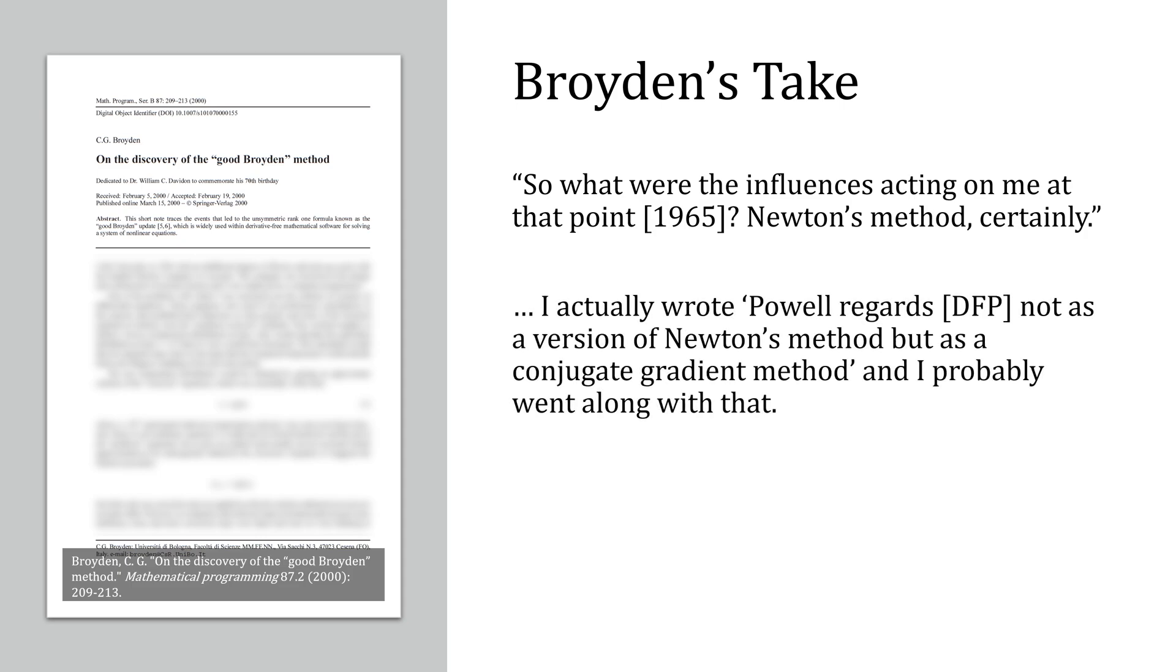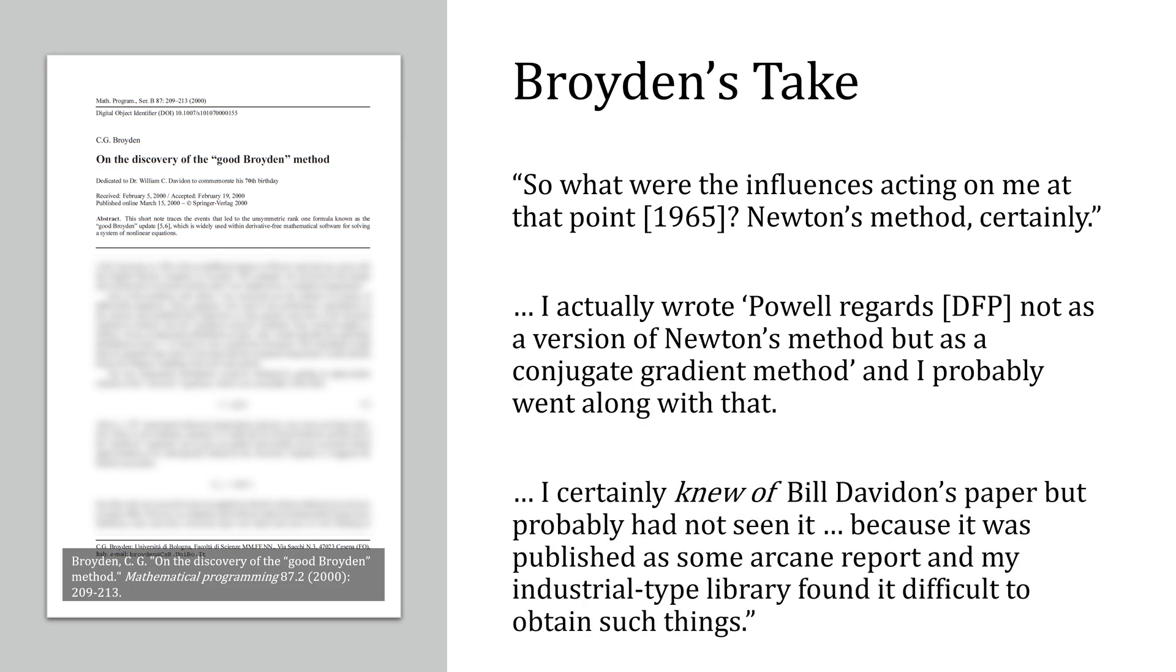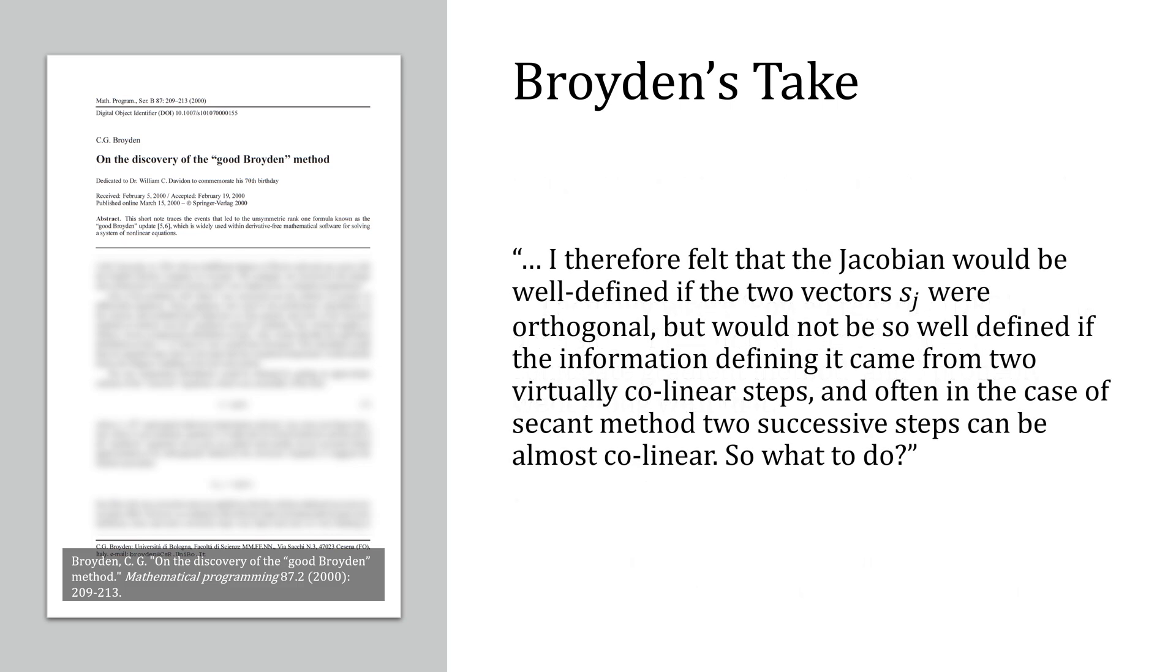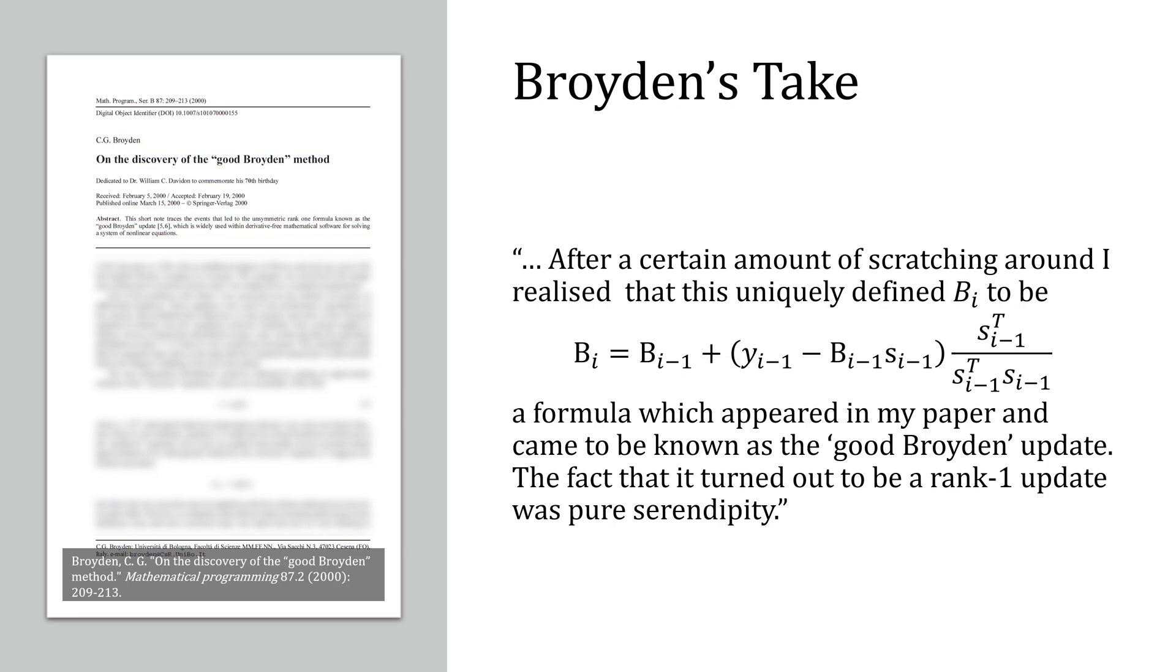In 2000, Broyden wrote on the discovery of the good Broyden method, which he gives his take. Fun fact, he also dedicates the paper to Bill Davidon. Broyden was of the mind that he was trying to improve Newton's method. He was also aware of Davidon-Fletcher-Powell, which probably deserves its own video, but went with the mindset that this was of conjugate gradient method. And he was also aware of Davidon's paper, but hadn't read it. If he had tried to generalize Secant method, that would have resulted in collinear steps instead of the orthogonal approach that he went with. And as a fun tidbit, the fact that Broyden's method uses a Rank 1 update was a complete coincidence. For more about Rank 1 updates, check out the Sherman-Morrison formula.